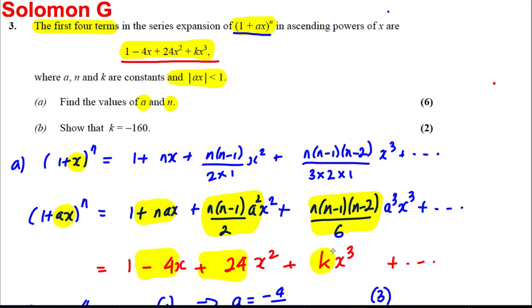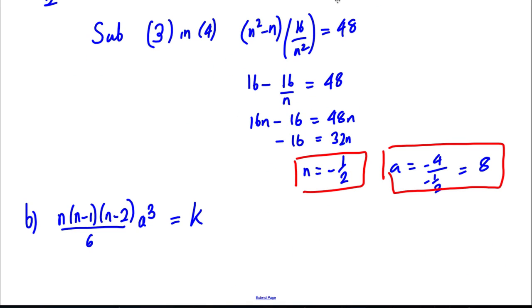Comparing these two things here. Comparing that with K. But now, obviously, we know our N and we know our A. So this is therefore telling us that negative 1 half, negative 3 over 2, negative 5 over 2, over 6, multiplied by 8 cubed is going to be equal to K.